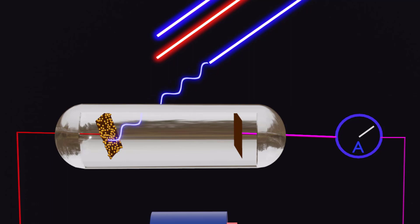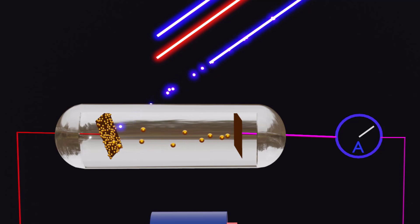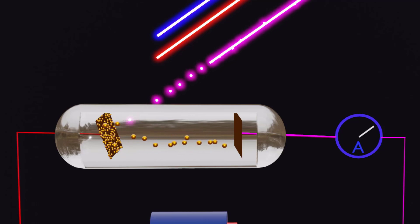In summary, the photoelectric effect demonstrates that light exhibits particle-like properties. The frequency and intensity of light impact the kinetic energy and number of the ejected electrons. We hope this video has deepened your understanding of this fascinating phenomenon and its implications for our understanding of light.